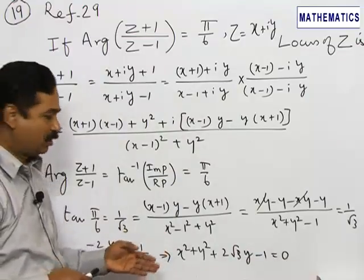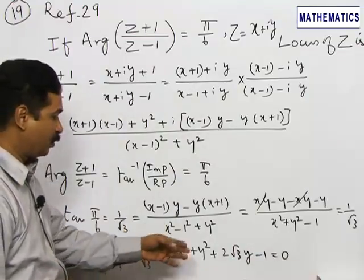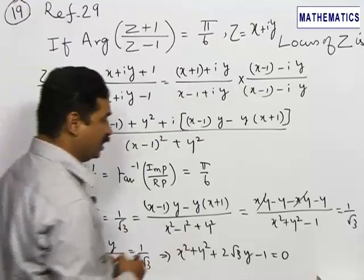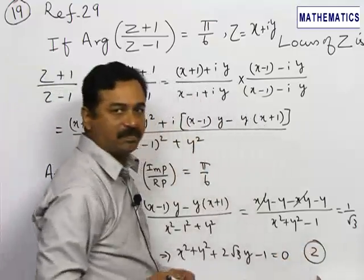Among the four choices, if you refer to x² + y² + 2√3y - 1, the second choice is the correct answer. Well done.